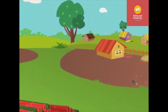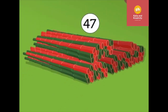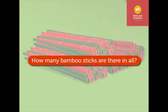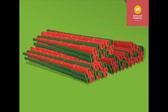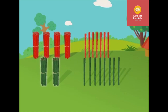Can you see those colourful bamboo sticks? There are forty-seven red bamboo sticks and twenty-eight green bamboo sticks. Let's see how many bamboo sticks there are in all. Let's group them into tens and ones and then add them. So, there are four-tens and seven-ones red bamboo sticks and two-tens and eight-ones green bamboo sticks.